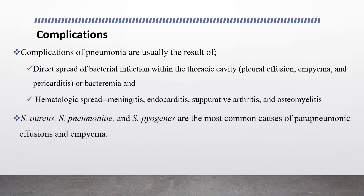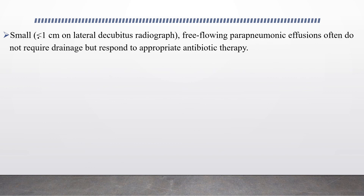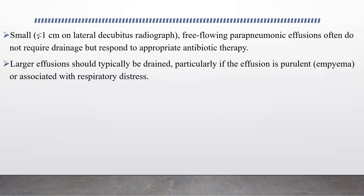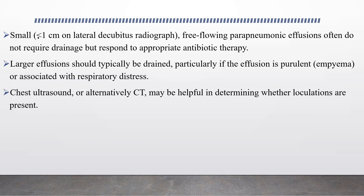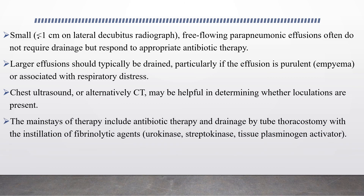Complications of pneumonia arise from either direct spread of bacterial infection within the thoracic cavity — such as pleural effusion, empyema, or pericarditis — or from bacteremia with extrapulmonary spread such as meningitis, endocarditis, septic arthritis, and osteomyelitis. Streptococcus pneumoniae and Streptococcus pyogenes are the most common causes of parapneumonic effusion and empyema. Small free-flowing parapneumonic effusions often do not require drainage and respond to antibiotic therapy, but larger effusions should typically be drained, particularly if purulent or associated with respiratory distress. The mainstay of therapy includes antibiotics and drainage by tube thoracostomy with instillation of fibrinolytic agents such as urokinase.